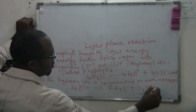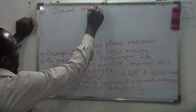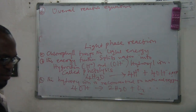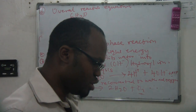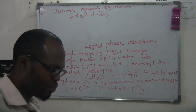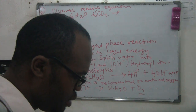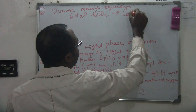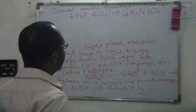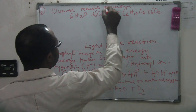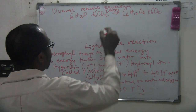The overall reaction equation shows: 6H₂O plus 6CO₂, in the presence of light energy and chlorophyll, gives glucose plus oxygen as a byproduct.